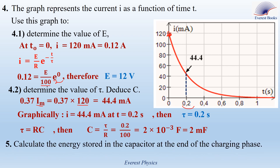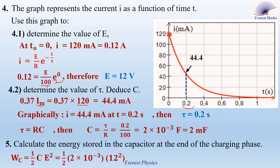Number 5: calculate the energy stored in the capacitor at the end of the charging phase. The energy stored in the capacitor is given by the formula: one half C times Uc squared. But at the end of the charging process, Uc equals E. So Wc equals one half C times E squared. Replace each physical quantity by its value: C equals 2 times 10 to the power minus 3 farads and E equals 12 volts. Therefore, the energy stored in the capacitor equals 0.1440 joules.